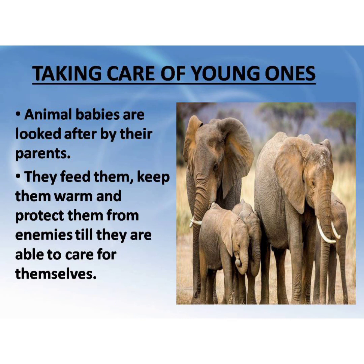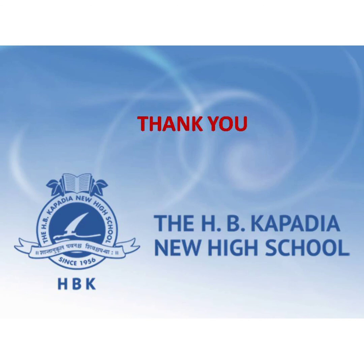Taking care of young ones: Animal babies are looked after by their parents. They feed them, keep them warm and protect them from enemies till they are able to care for themselves. Animals such as birds and mammals take care of their young ones by keeping them safe and feeding them. With this, we come to the end of our revision of chapter 4th, Reproduction in Animals.